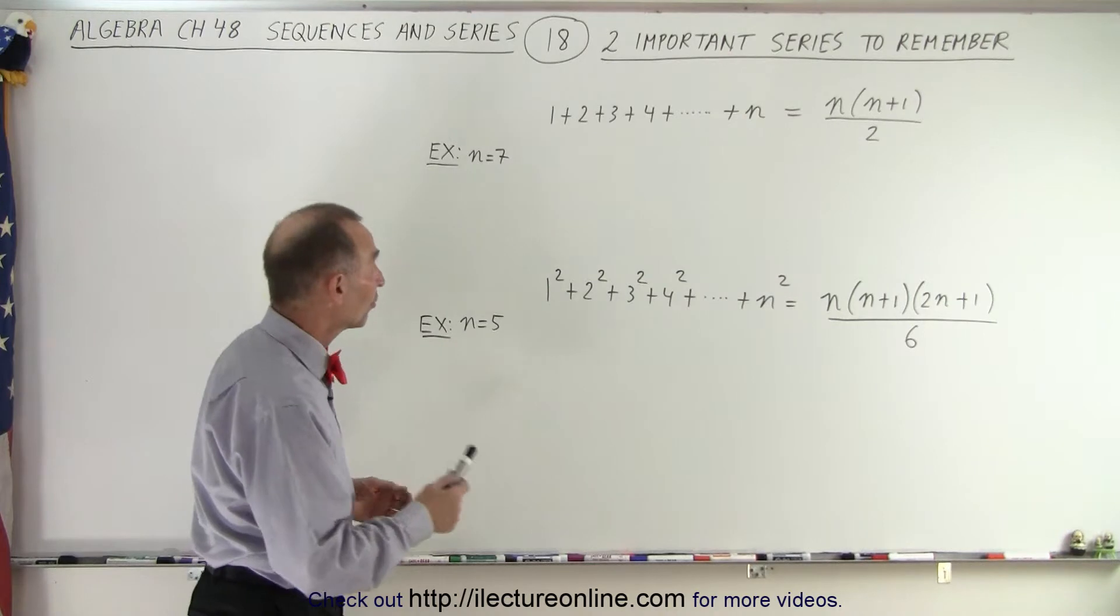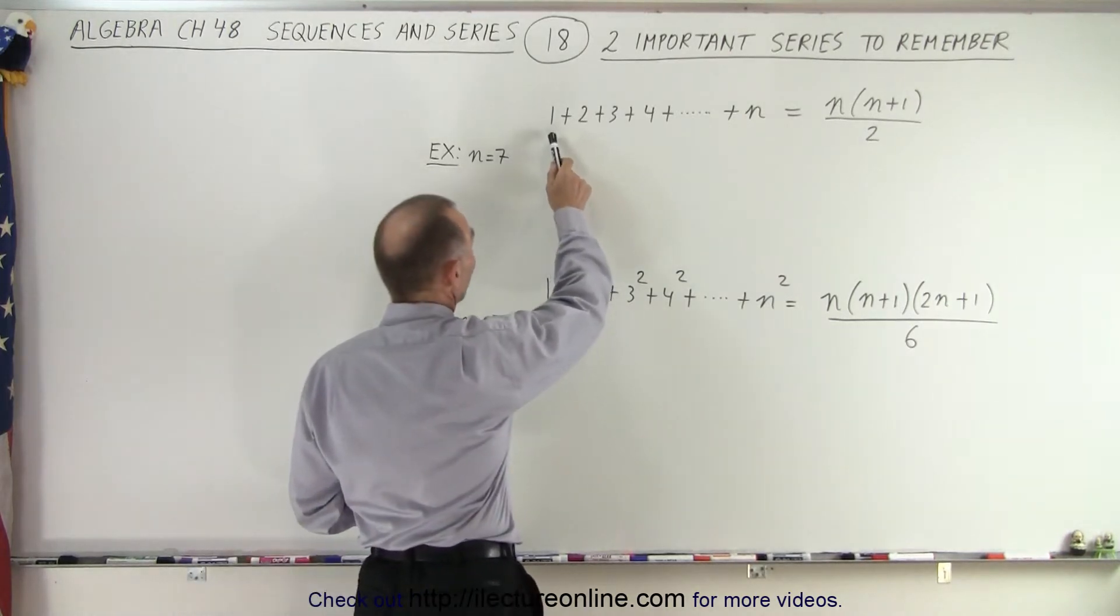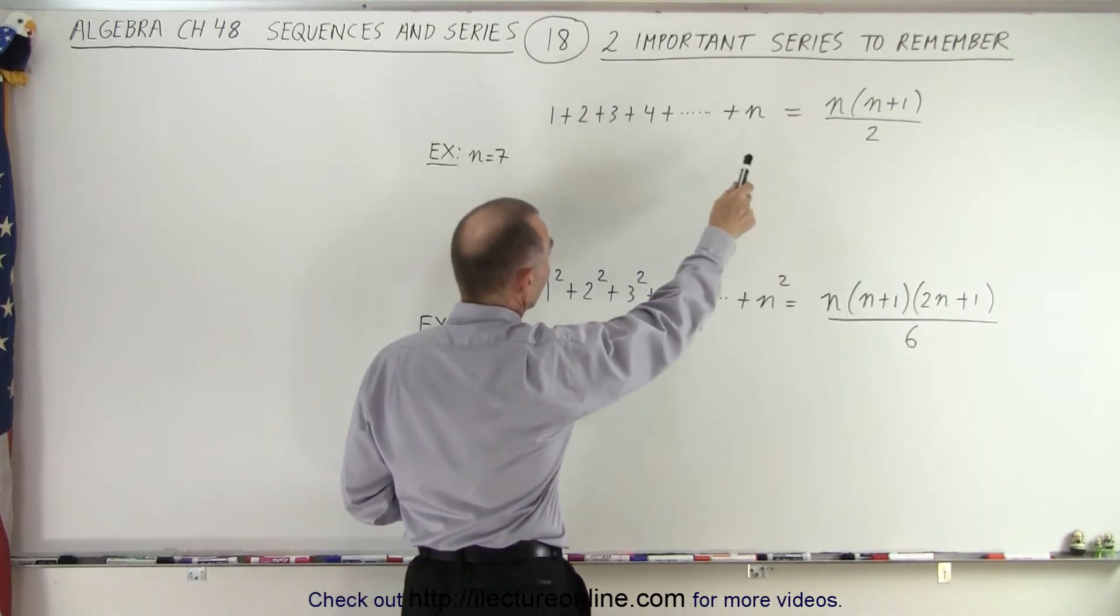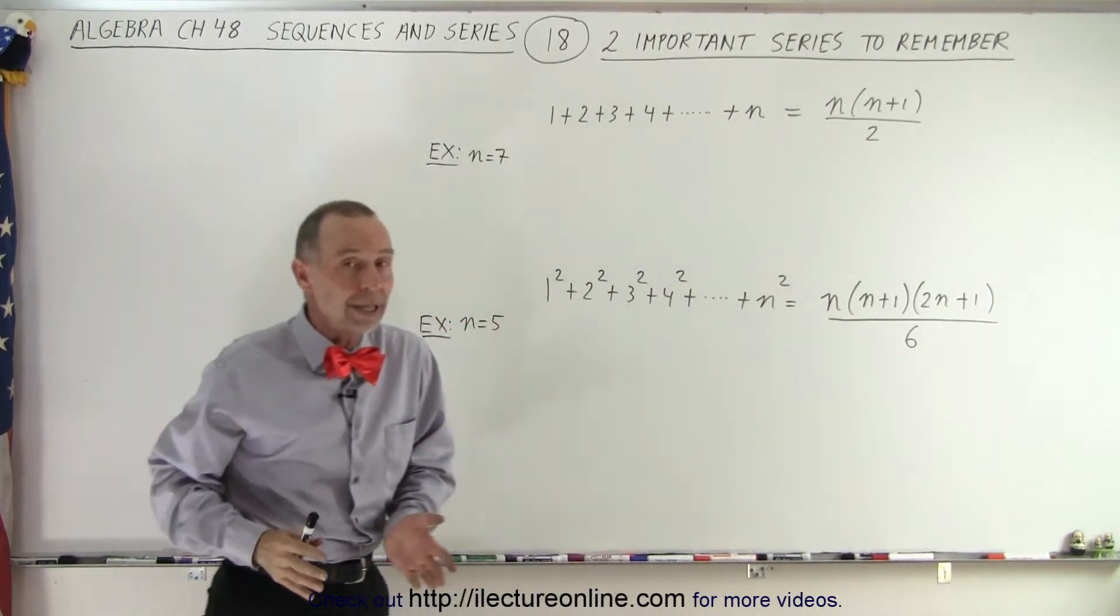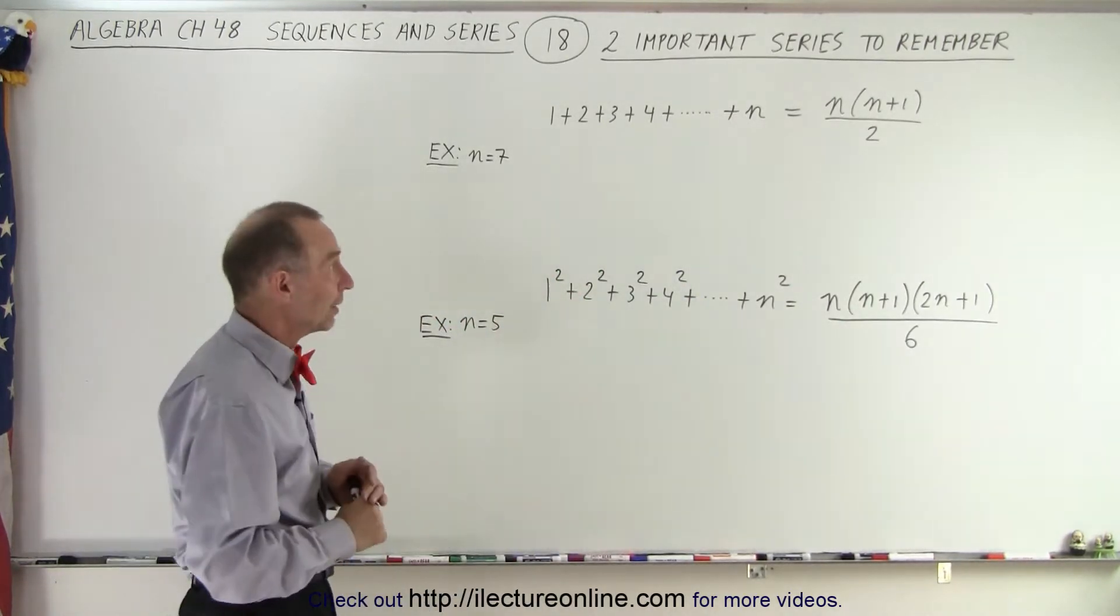They are the sum of the integer numbers starting at 1: 1 plus 2 plus 3 plus 4 plus 5 all the way up to n, whatever n may happen to be. n could be 10, n could be 20, n could be 3, it doesn't matter.